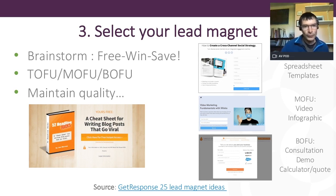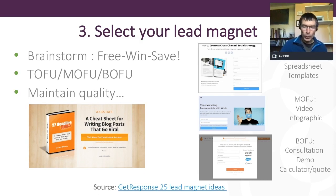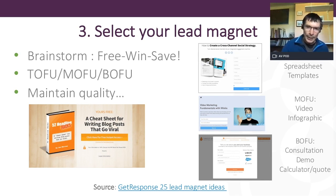I'm going to look at ToFu, MoFu, BoFu — the different parts of the funnel. The T is top, then middle, and then bottom of funnel content. You can see some classic examples: white papers and templates for the top of the funnel, videos and infographics when people want to learn more about a brand, and then case studies and testimonials further down the funnel.